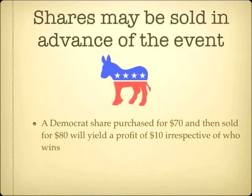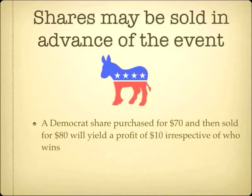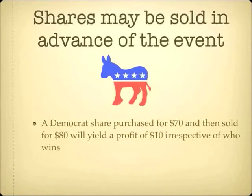If a Democrat share is bought for $70 and then sold for $80, that's a $10 profit and it doesn't matter who wins — you've got that $10 now. You might prefer to take $10 now rather than wait to see if Obama wins and maybe get an extra $30 instead. Shares can be sold before the event that they're predicting actually happens.